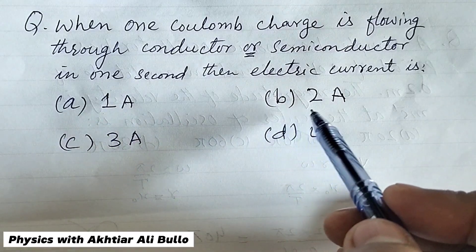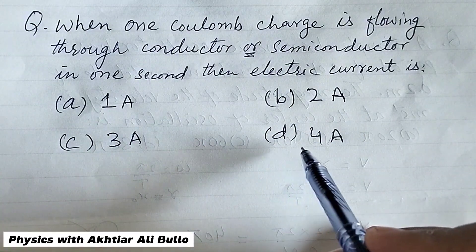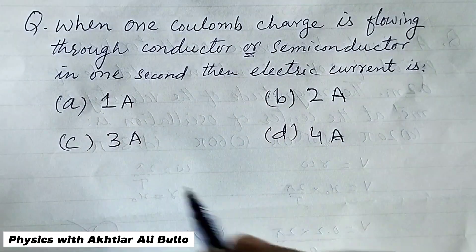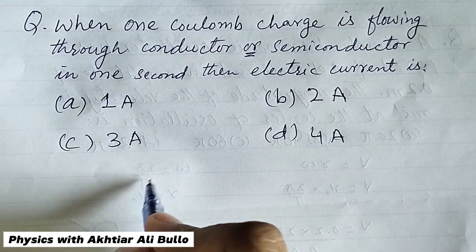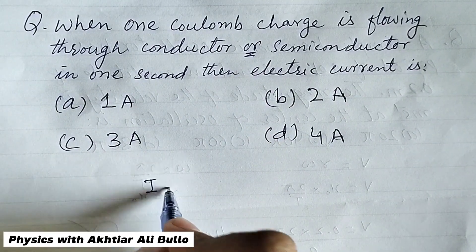A, 1A, B, 2A, C, 3A, D, 4A. Electric current is calculated by using the formula